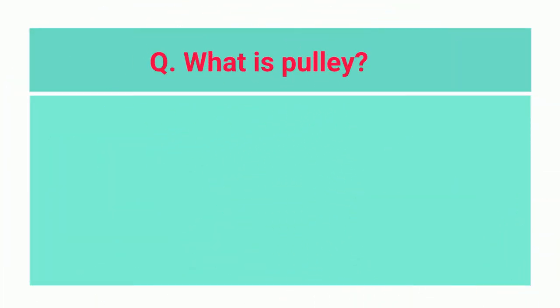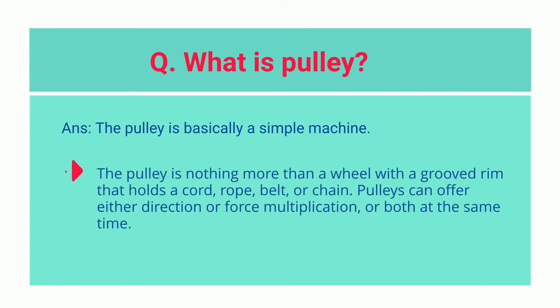Q. What is a pulley? A. The pulley is basically a simple machine. The pulley is nothing more than a wheel with a grooved rim that holds a cord, rope, belt, or chain. Pulleys can offer either direction or force multiplication, or both at the same time.